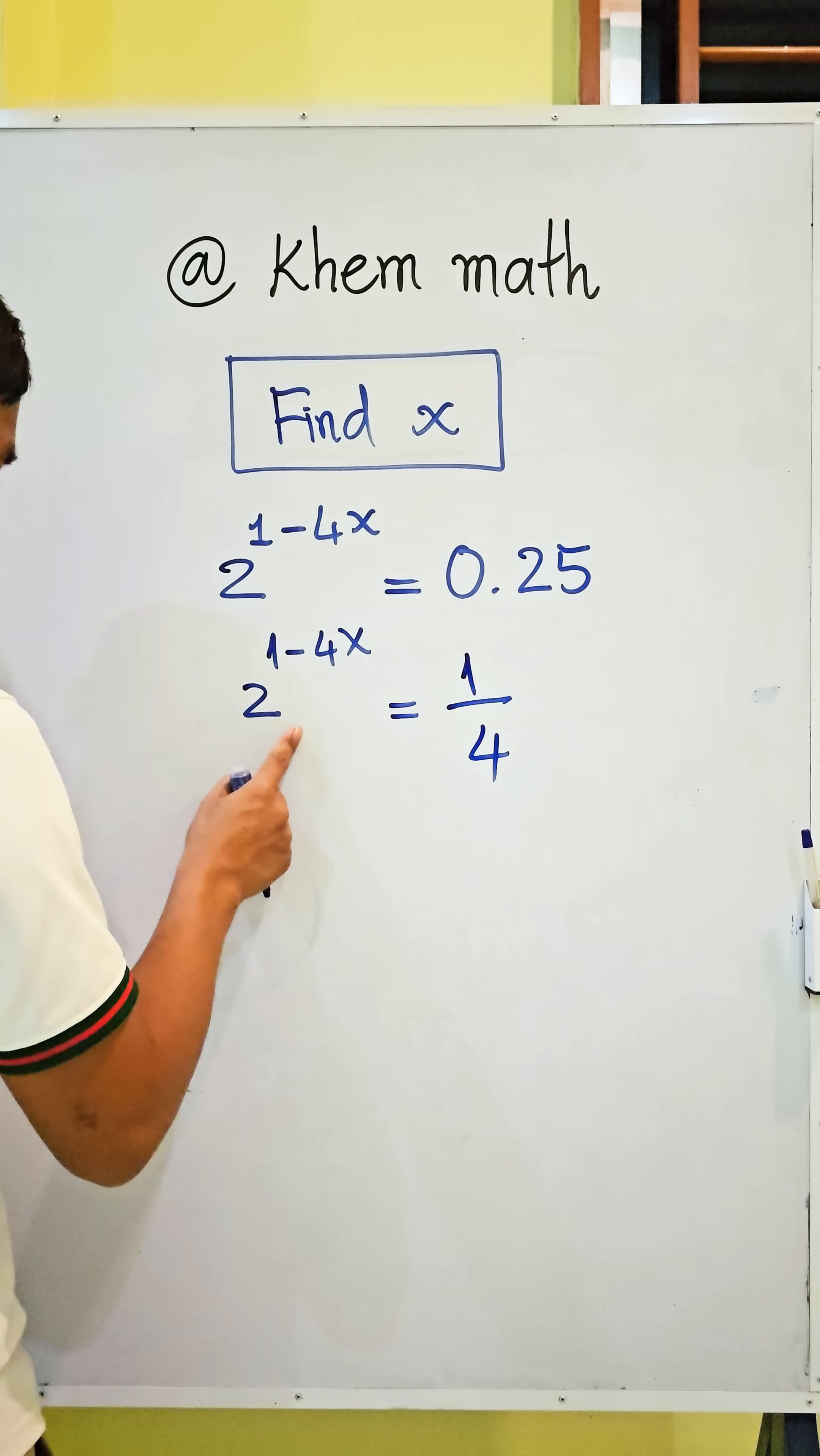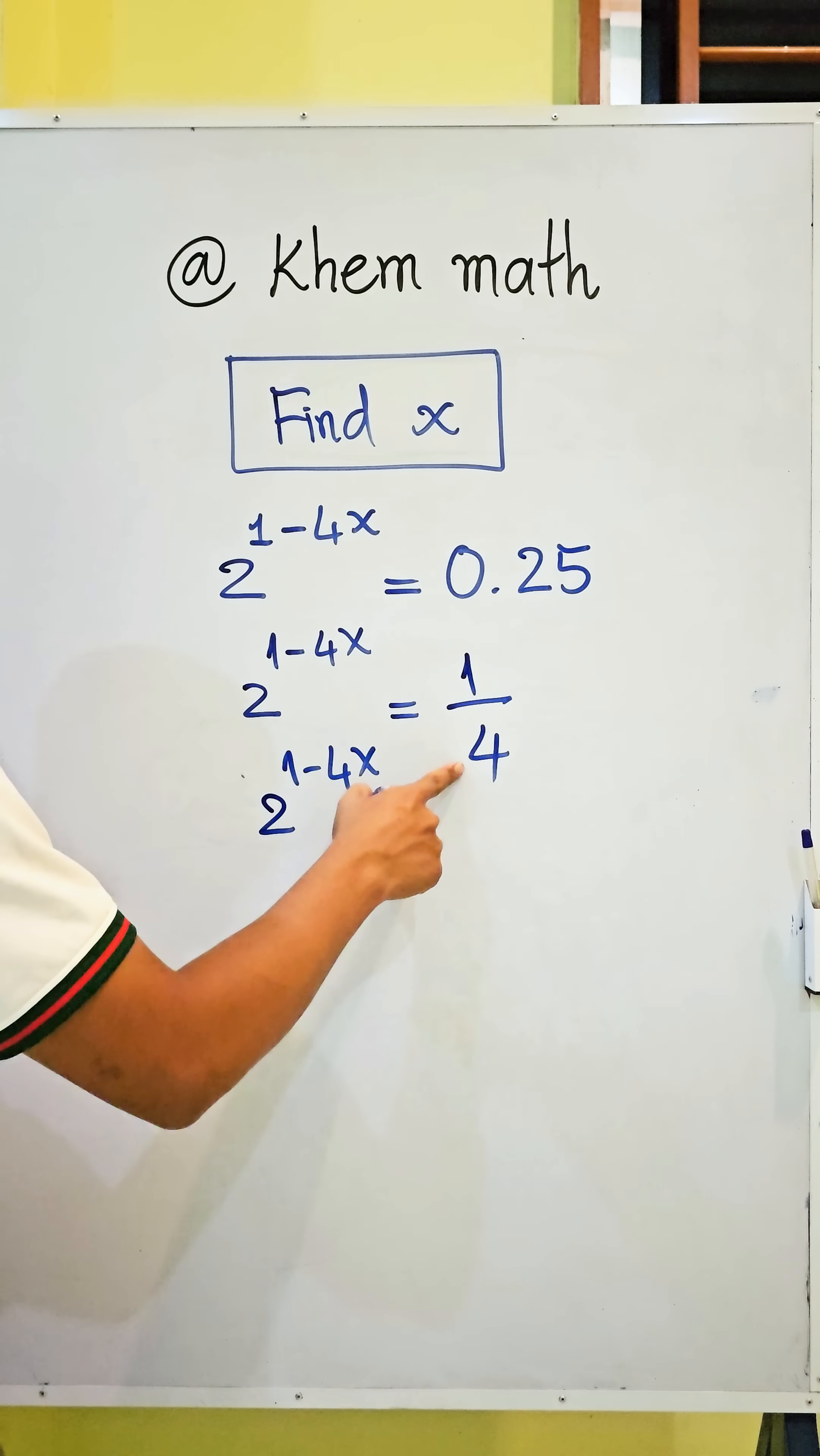So 2 to the power of 1 minus 4x equals 1 divided by 2 squared.